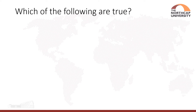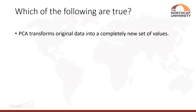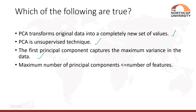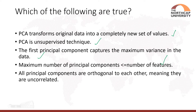The next question is: which of the following are true? PCA transforms the original data into a completely new set of values — true. PCA is an unsupervised technique — yes. The first principal component captures the maximum variance in the data — yes. The maximum number of principal components should be less than or equal to the number of features — yes. All the principal components are orthogonal to each other, meaning they are uncorrelated — yes. So all of the above options are correct.